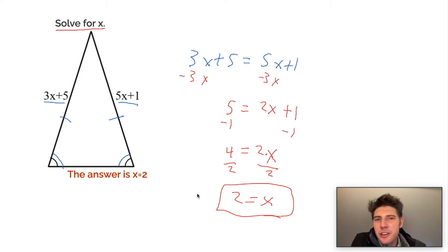So that's how these work when you're trying to solve for x and you're dealing with isosceles triangles. You usually will just set the two sides equal to each other.